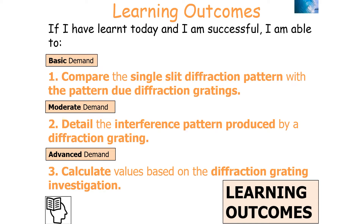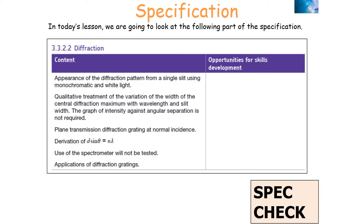If you are successful in today's lesson, you should be able to compare the single slit diffraction pattern with the pattern due to diffraction gratings, detail the interference pattern produced by diffraction gratings, and calculate values based on the diffraction gratings investigation. We're looking at section 3.3.2.2 diffraction in the AQA A-level physics specification, specifically the diffraction gratings section.